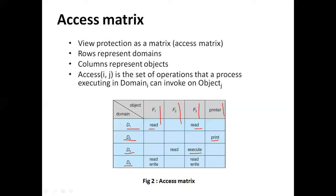Please look at the picture. There is a process d1 which is present in domain d1. We have four domains here: d1, d2, d3, and d4, and we have four objects or resources — three files f1, f2, and f3, and a printer. If a process is executing in domain d1, then it can perform operations on f1 and f3 because there are entries corresponding to those files.